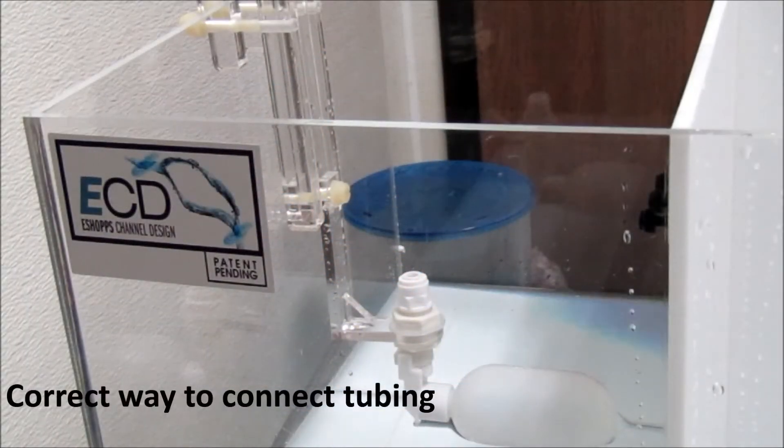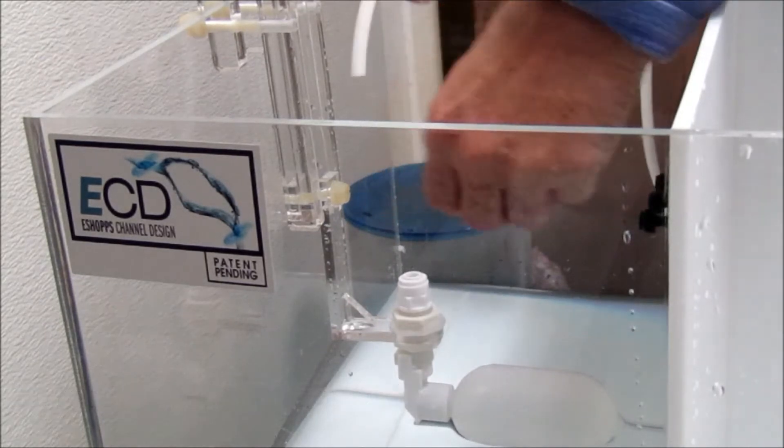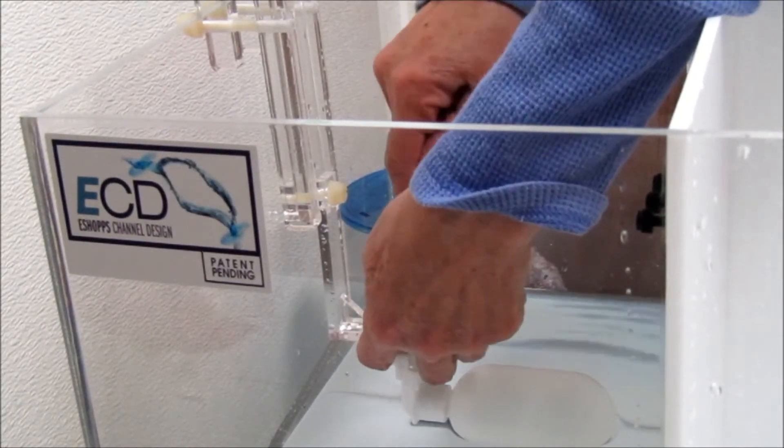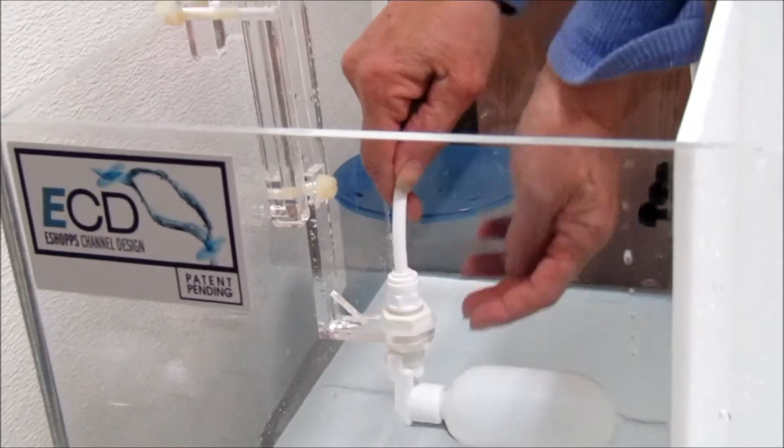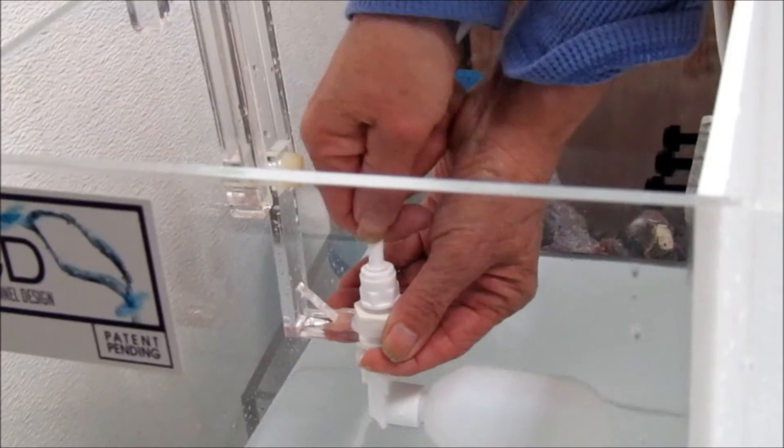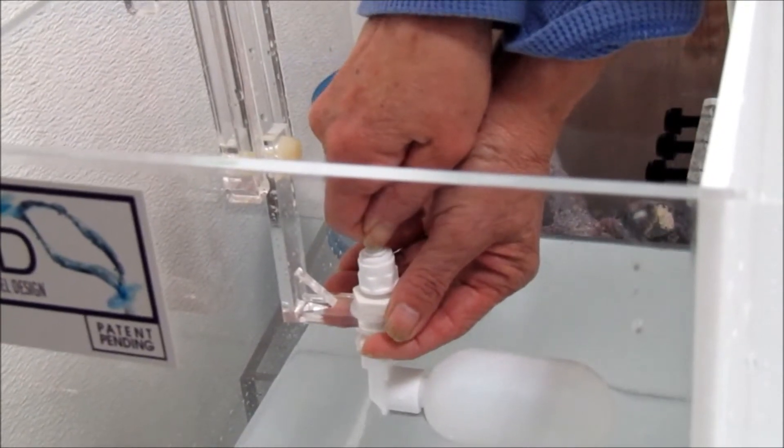This is the way you would insert the tube into the flow valve correctly so it doesn't leak. The white tubing should be inserted all the way in, push hard, and you can feel it lock in.